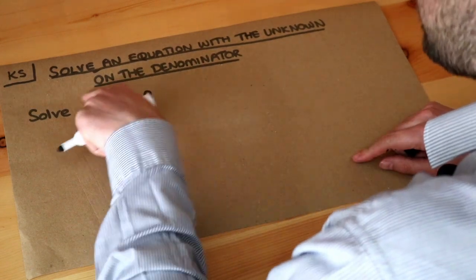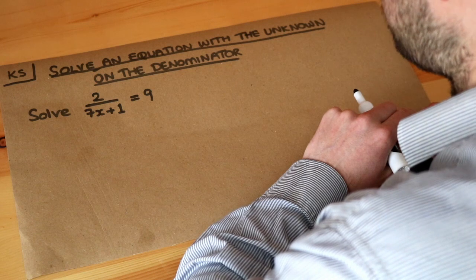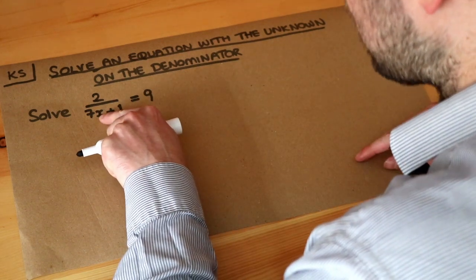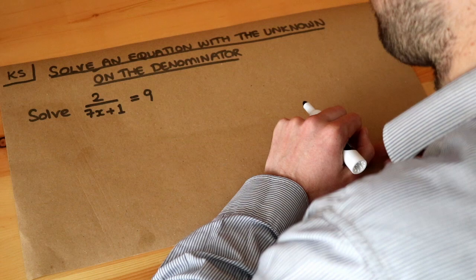So we've got an equation here, we have a fraction involved in the equation, but the unknown value, in this case the x, the variable of x, is on the denominator of that fraction.